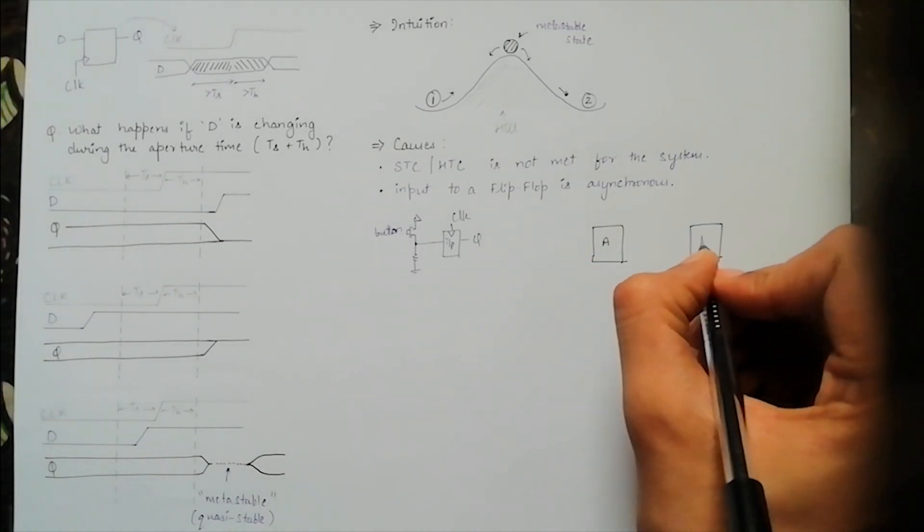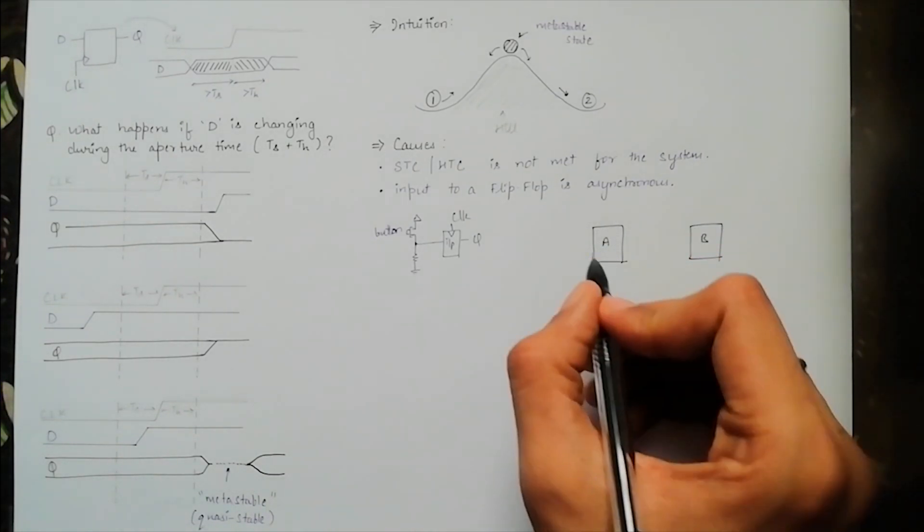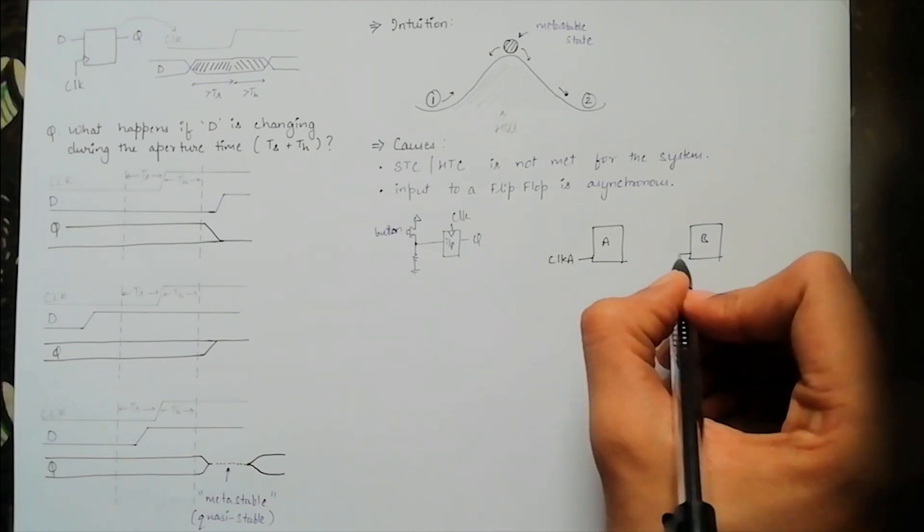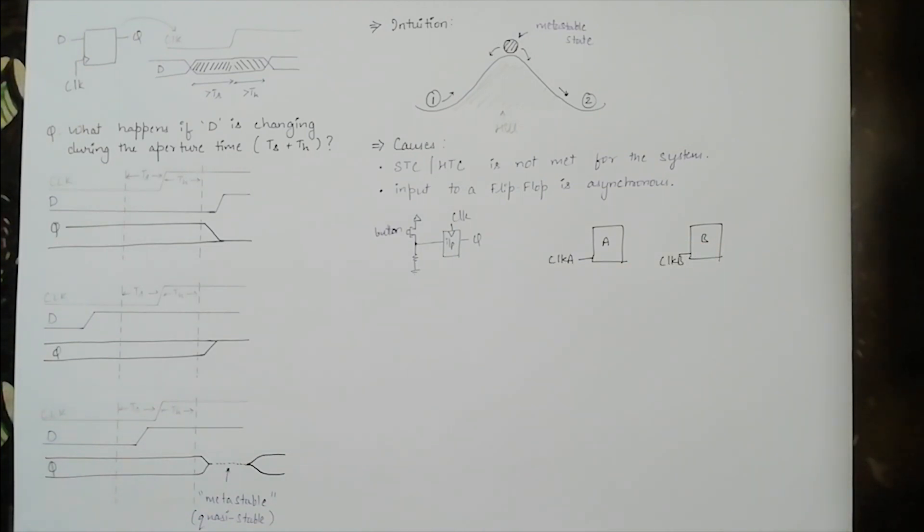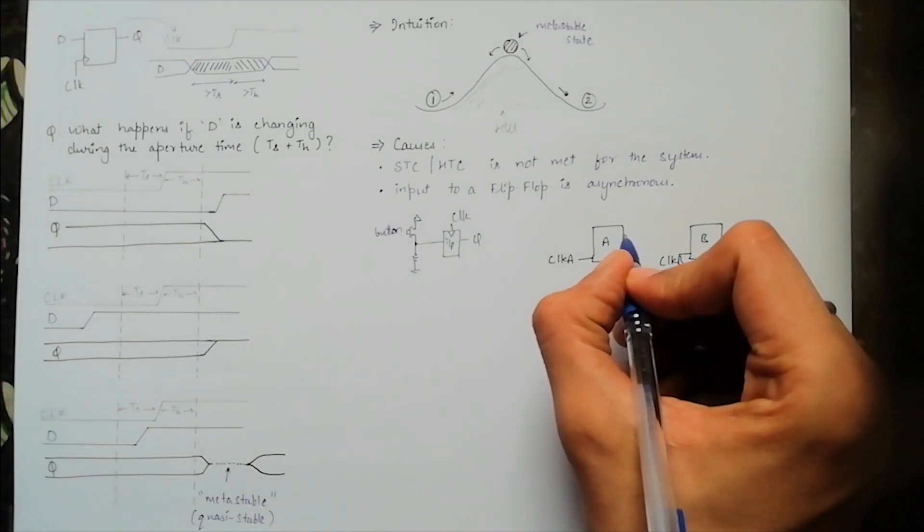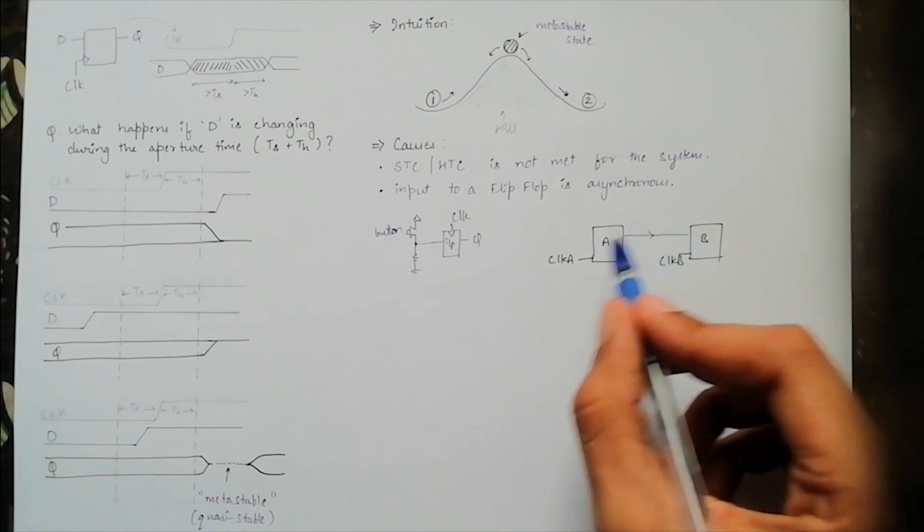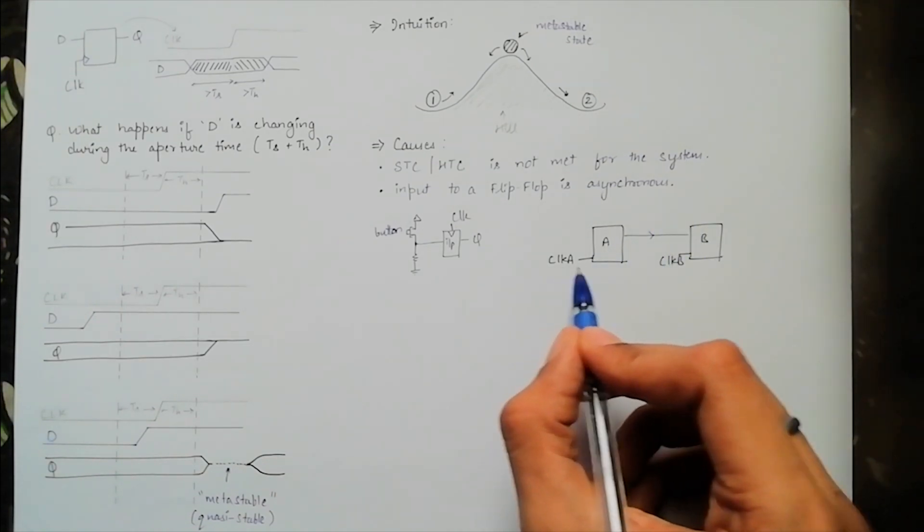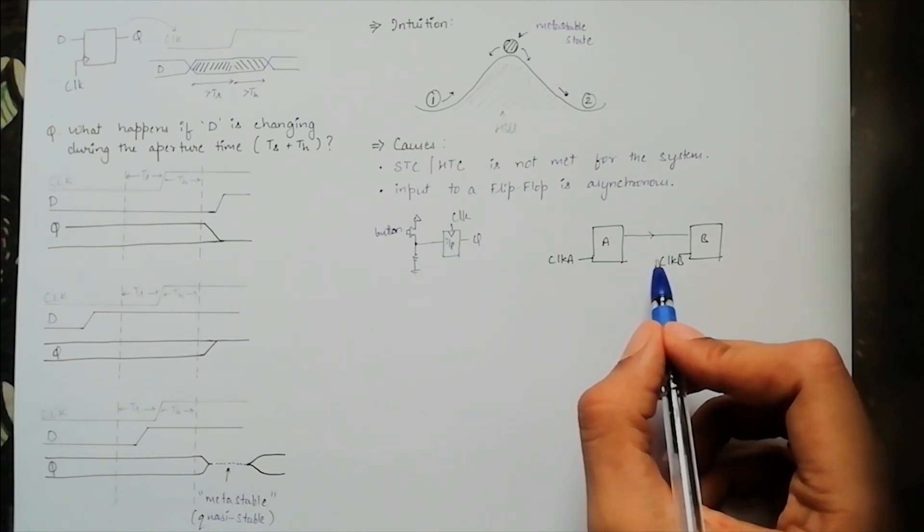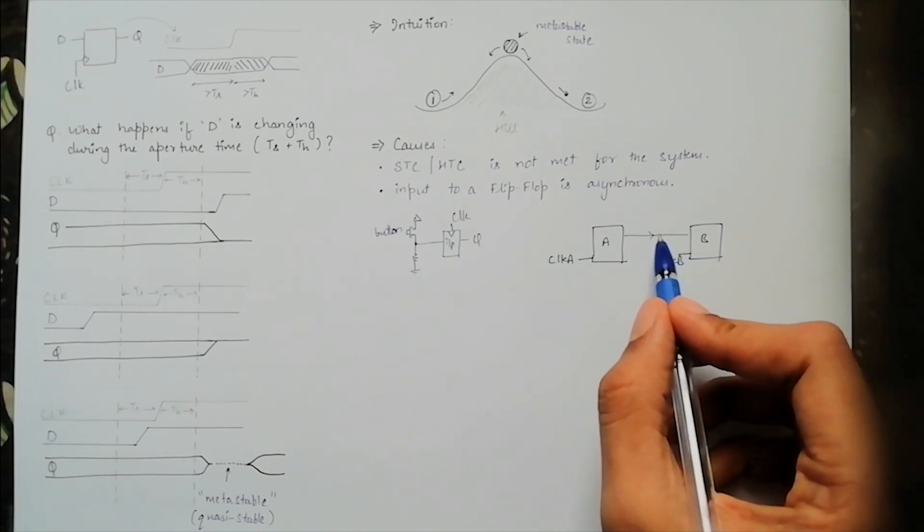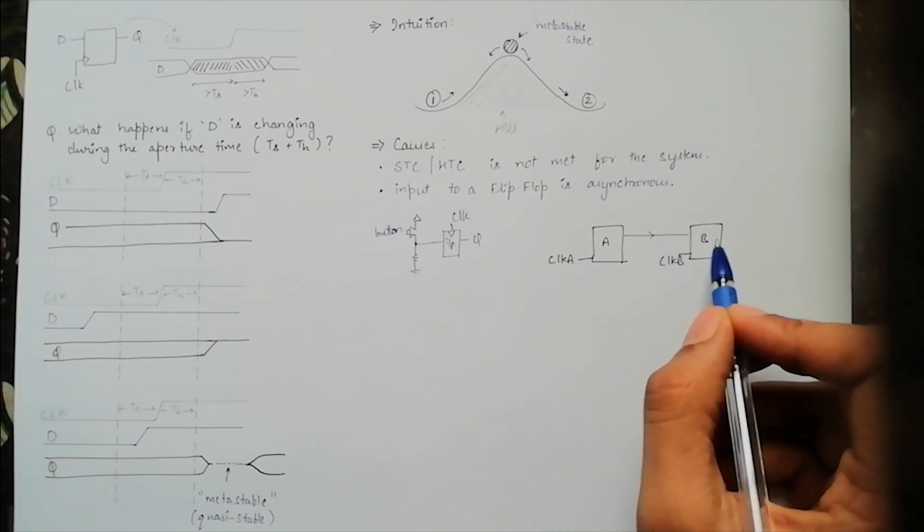To explain this statement, let's have an example of two systems A and B operating at different frequencies defined by clock A and clock B. Now let's say if A wants to share some data with B, then because of different frequencies, it can't be ensured that data received by B is not changing during the aperture time. So we can't ensure that the system doesn't go into a metastable state.